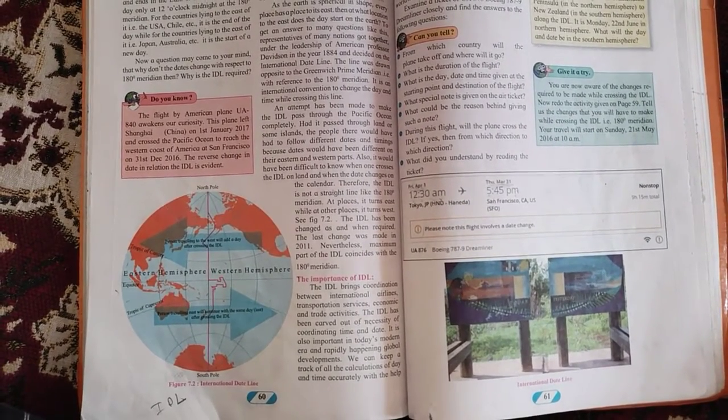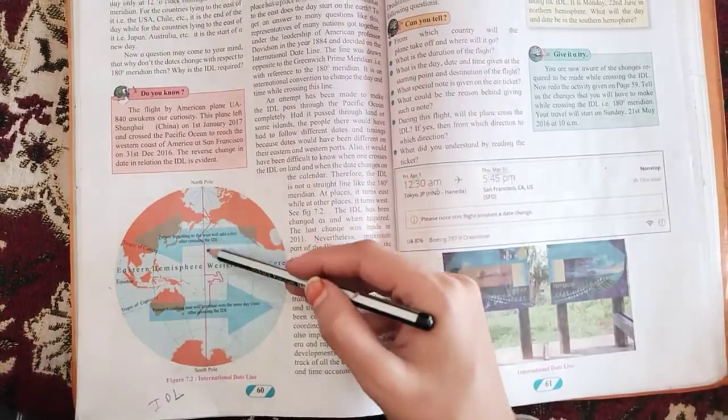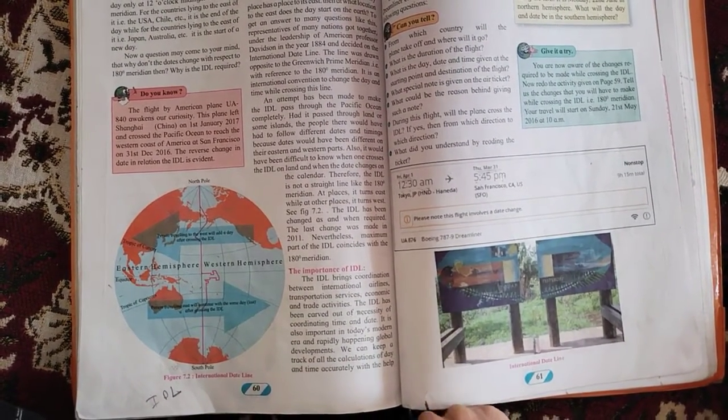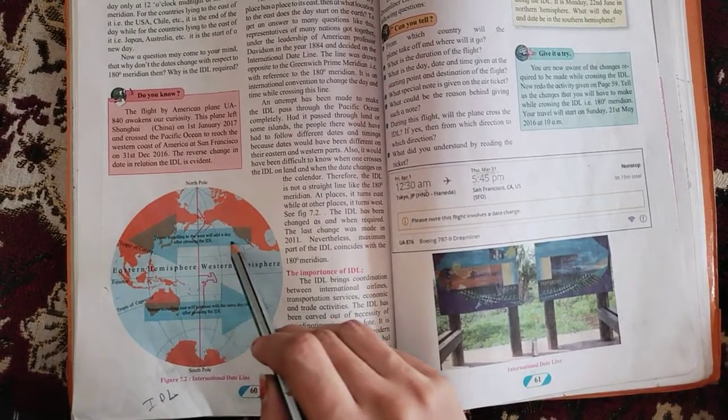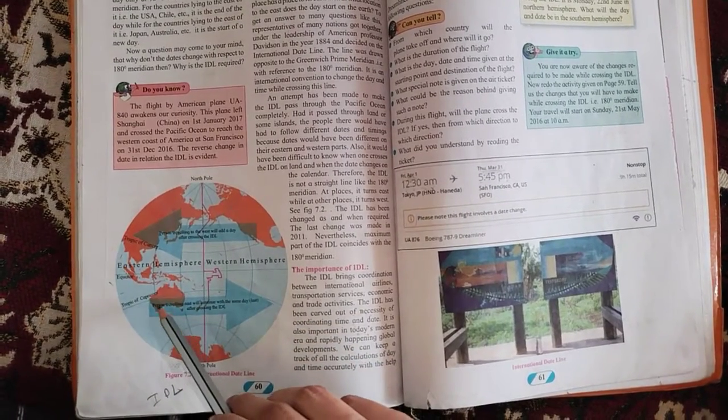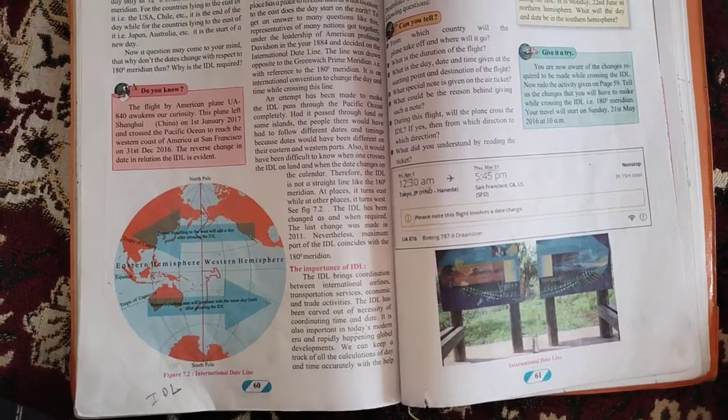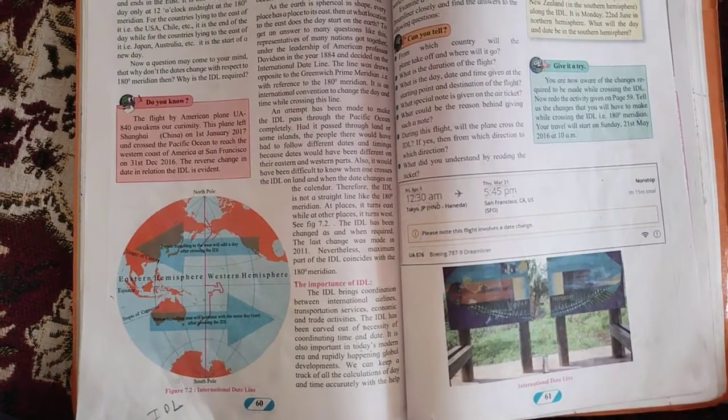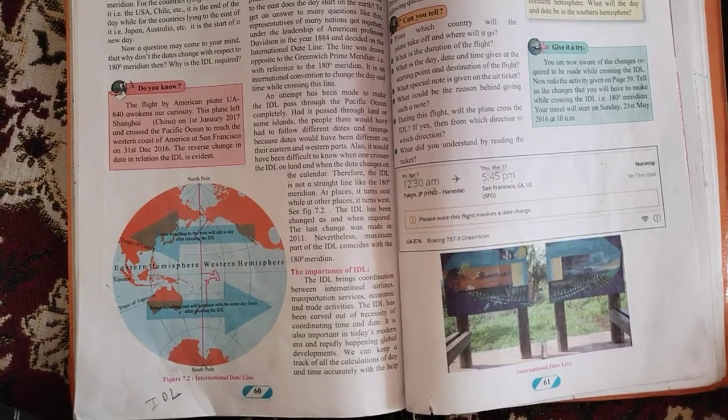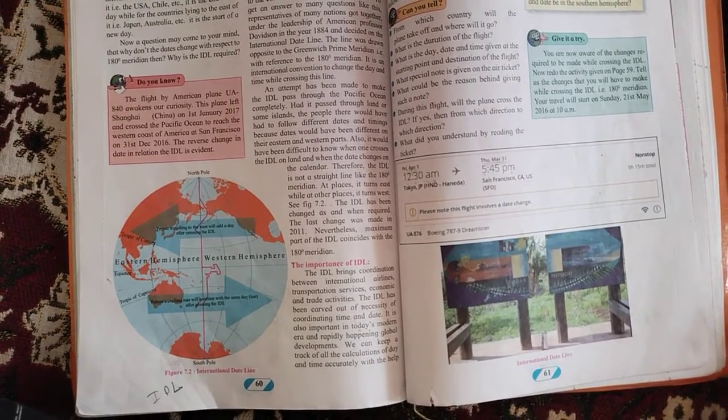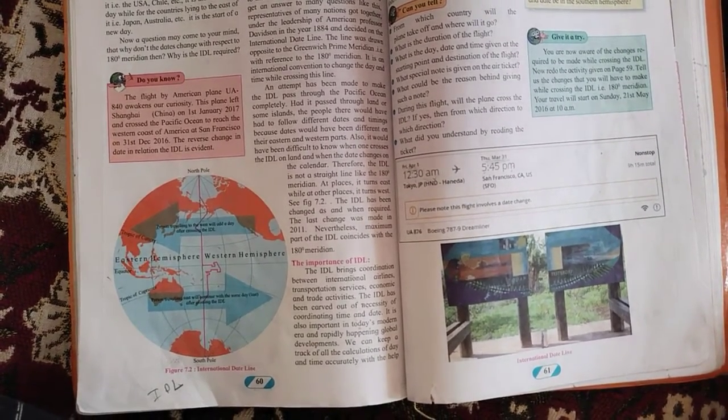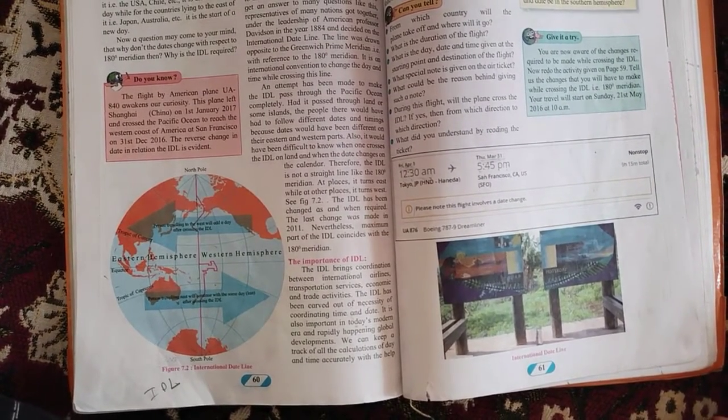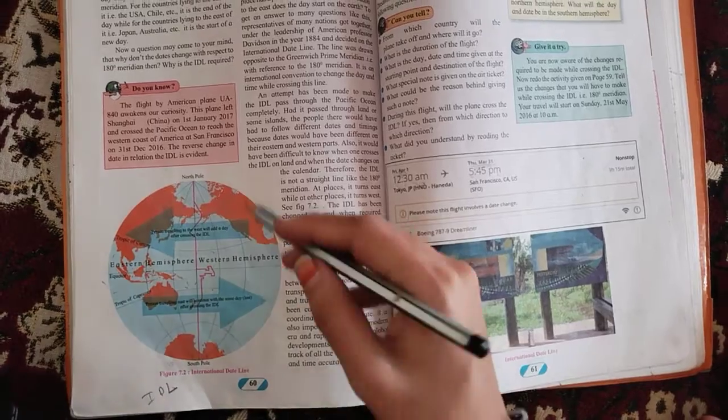This flight will cross the IDL during the journey. When the international date line is crossed while traveling towards the east, previous day to be considered. The journey of this flight is to start on Friday, 1st of April. The journey is going to complete on the previous day, that is 31st March. It means the flight will cross IDL while traveling towards the east.